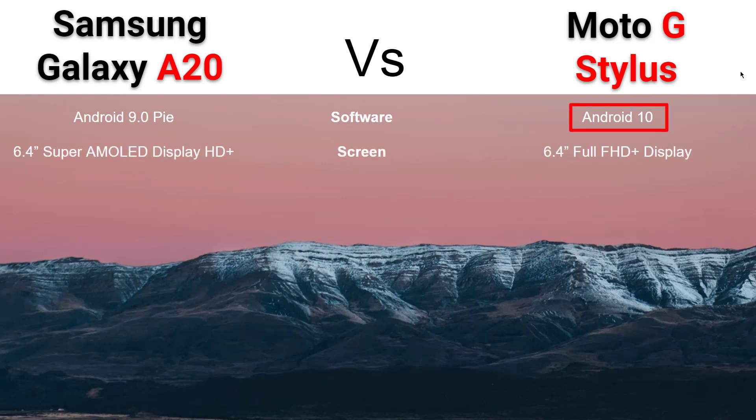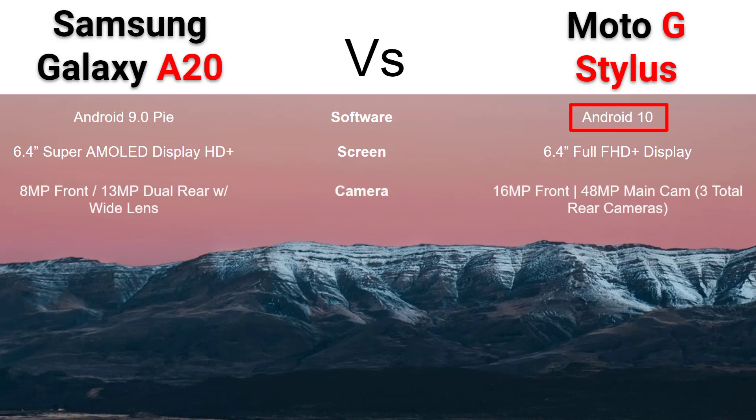When it comes to the screen, both of these phones actually have the same screen size at 6.4 inches. The A20 is going to be a Super AMOLED display, and the Moto G Stylus is going to be a full HD or FHD+ display. So it's kind of a tie there.